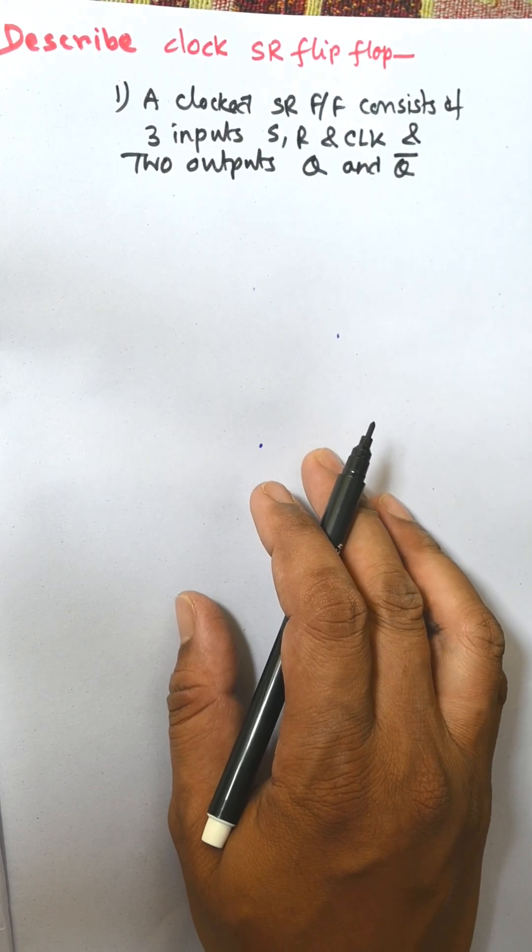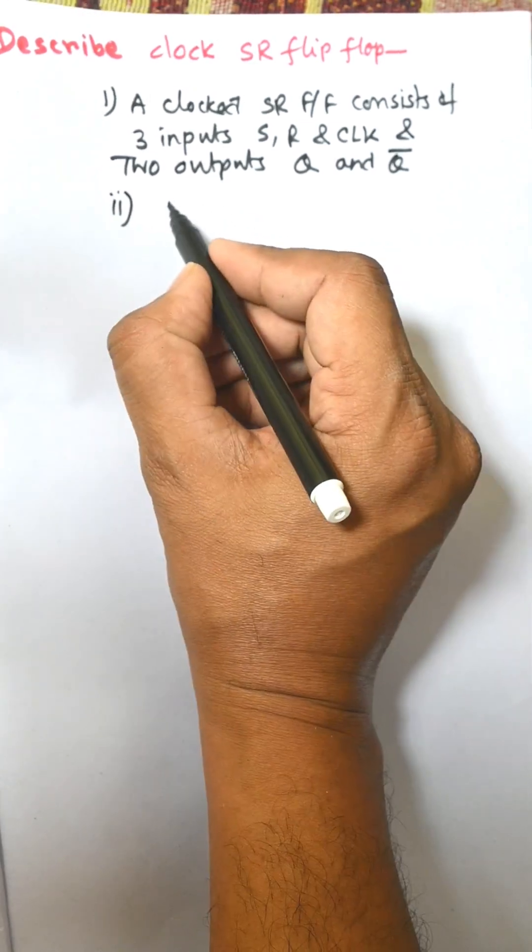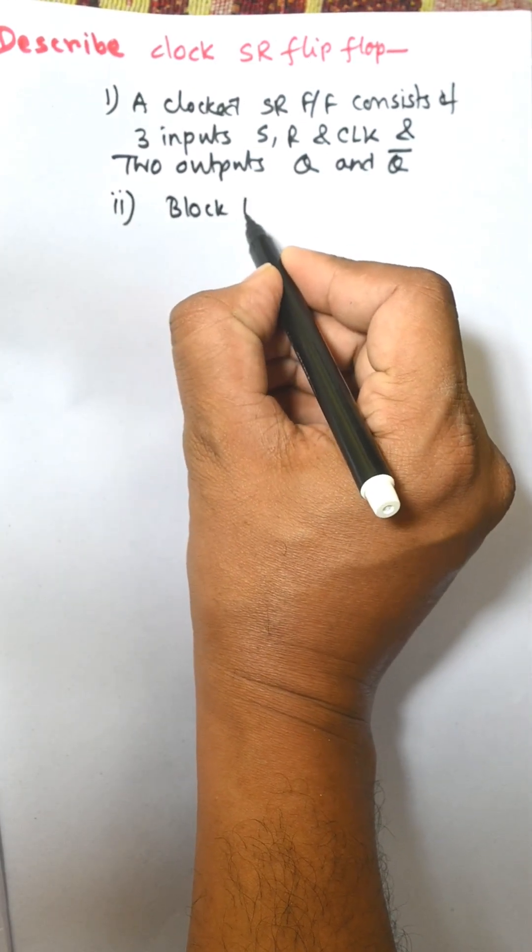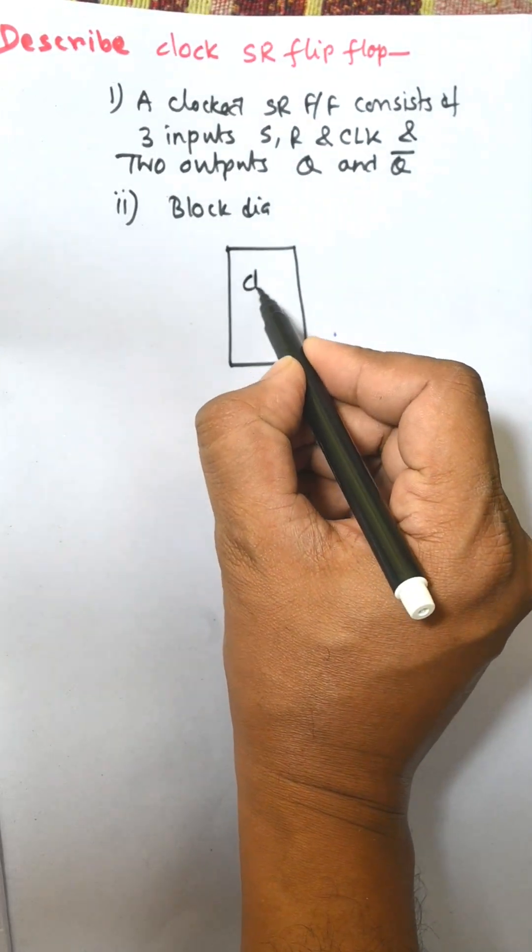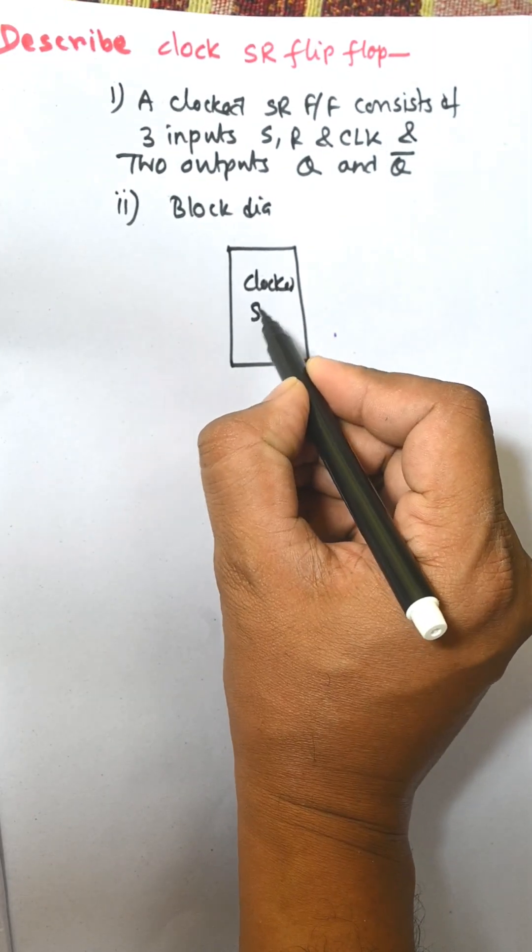Number two: block diagram. This is the block diagram of SR flip-flop. Clocked SR consists of S, R, and CLK.